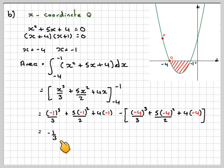That now gives me minus 1 third, because when you cube a negative number, you get a minus number. 5 times minus 1, so it's 5 over 2. Try not to do too much in one go. 4 times minus 1 makes minus 4.